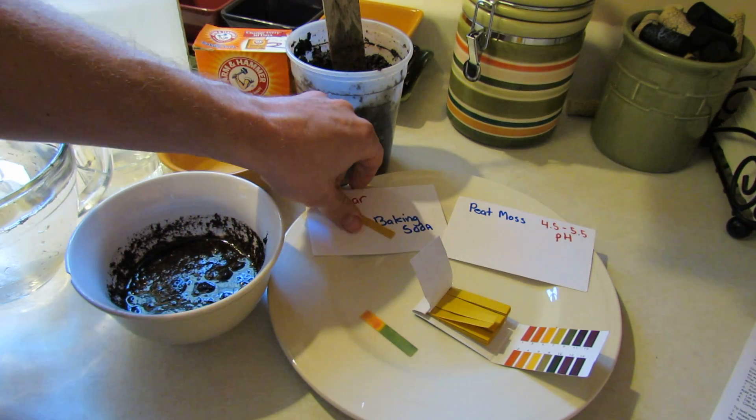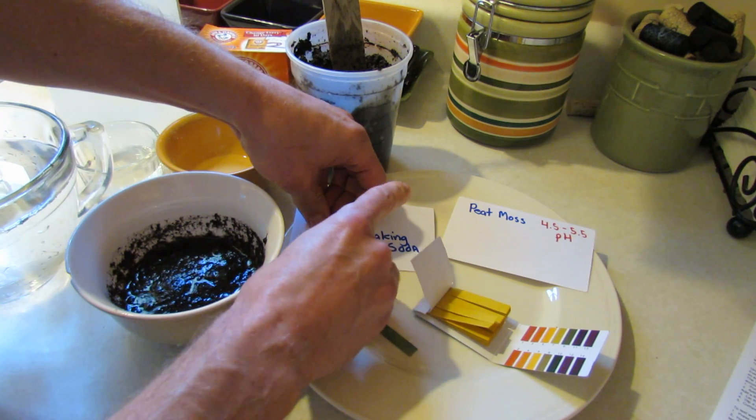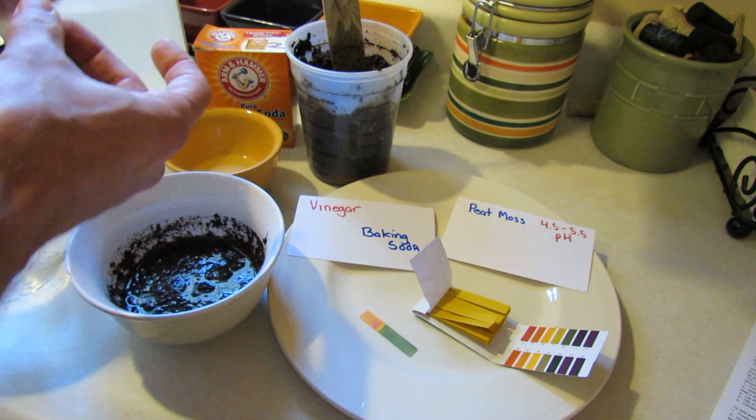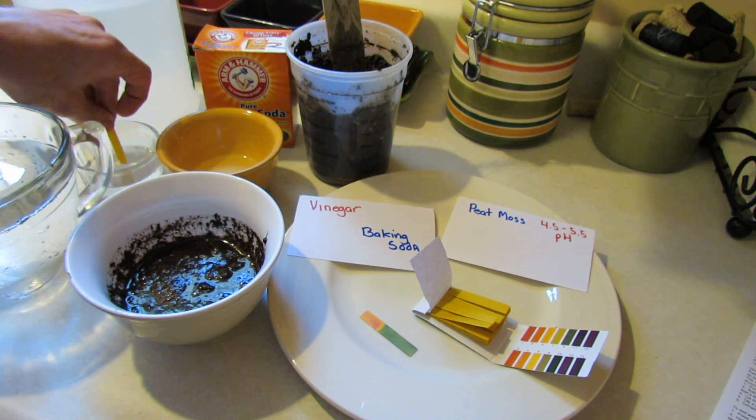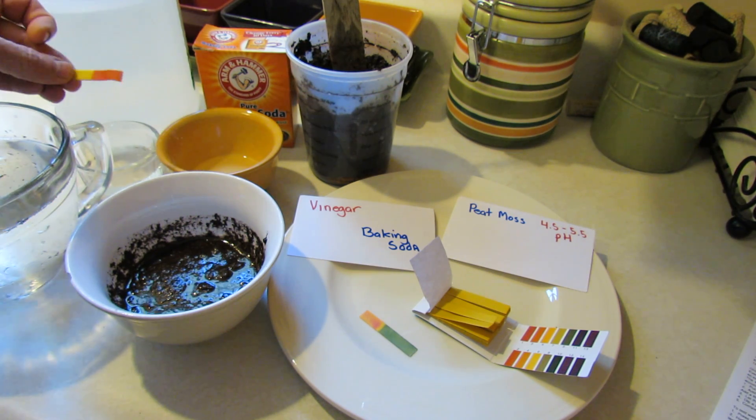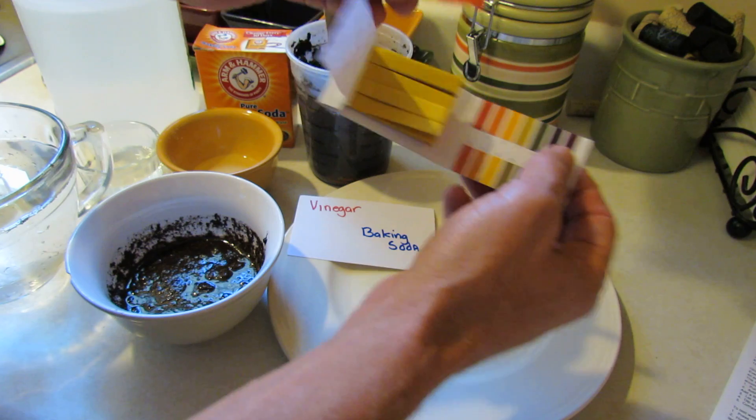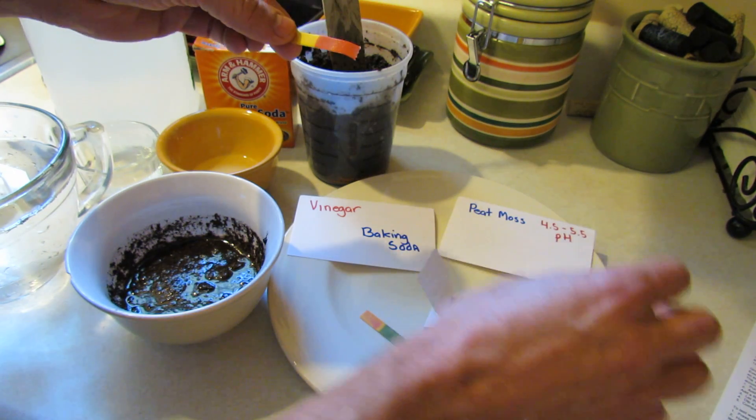While that sits I just want to show you what happens with vinegar and baking soda. This is another test strip. This is vinegar and you don't even need to leave it in there long but you can see right away it turns the dark orange color because it's extremely acidic.